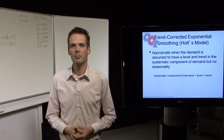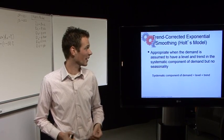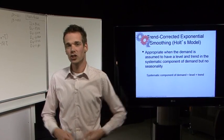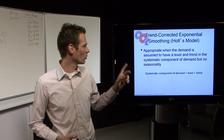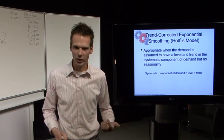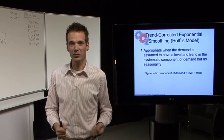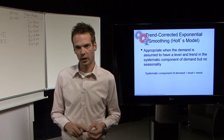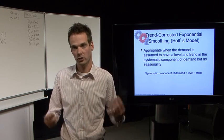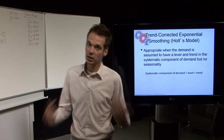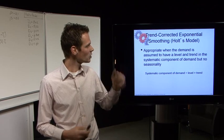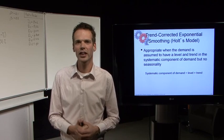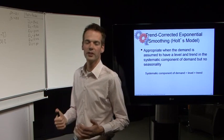Hello and welcome to this video about the trend corrected exponential smoothing, in other words the Holt's model. Holt's model is appropriate for when demand is assumed to have a level and a trend in the systematic component of demand, but it has no seasonality. Seasonality comes into play when we're talking about the Winters model, which is the next video. This video is about chapter 7, forecasting in the supply chain. My name is Frank Evers, lecturer at Windersheim University.